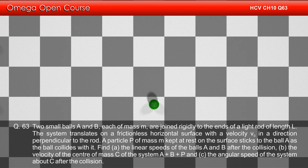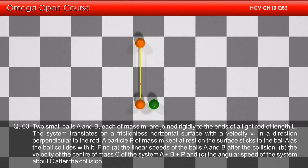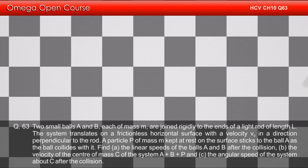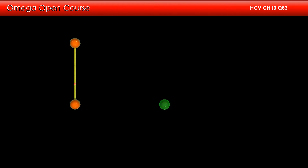Find: A, the linear speeds of the balls A and B after the collision; B, the velocity of center of mass C of A plus B plus P; and C, the angular speed of the system about C after the collision.